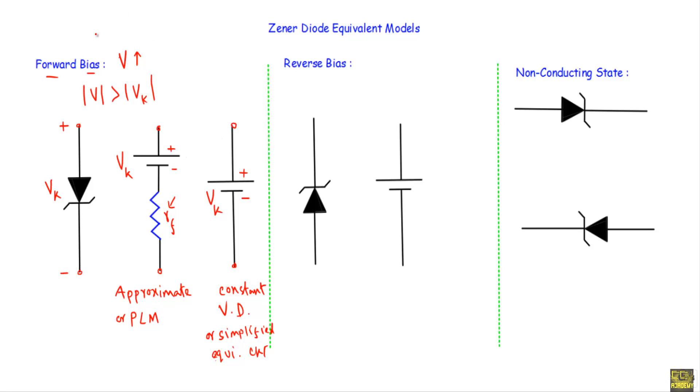When I show you the Zener diode clipper circuits, I will replace the Zener diode with its equivalent built-in potential when the Zener diode is in forward bias.